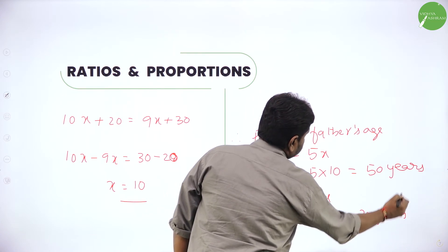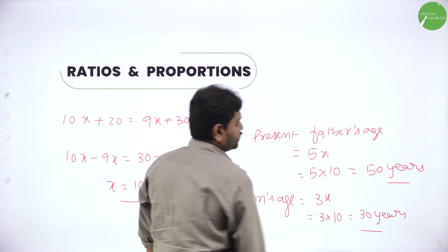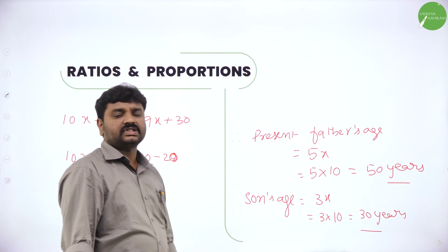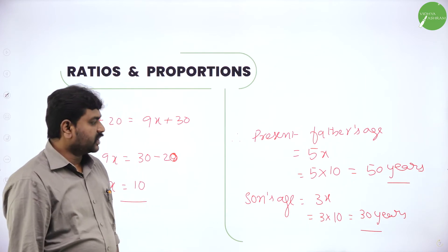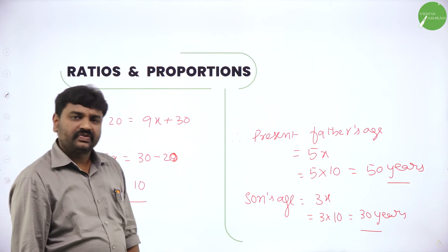So therefore present ages: present father's age is 5x, that is 5 into 10 — 50 years. And son's present age is 3x, that is 3 into 10 — 30 years. So son's age is 30 and father's age is 50.